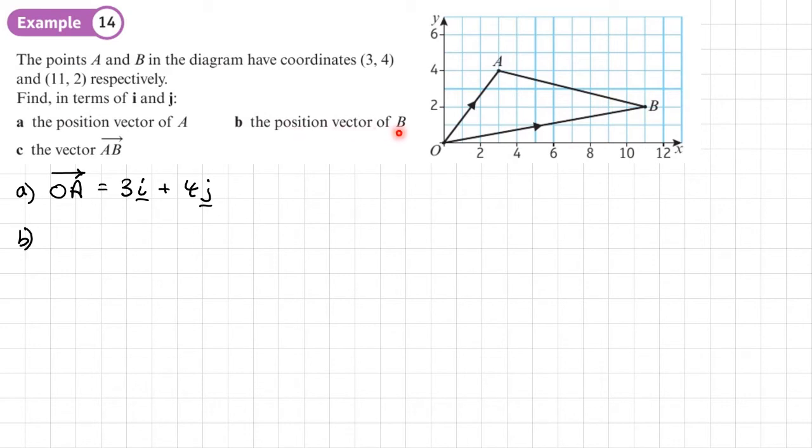Part B, the position vector of B. So how do we get from the origin to point B? So we write that as OB. So that's 11 across and 2 up. We see that from the coordinate. So that would be 11I plus 2J.